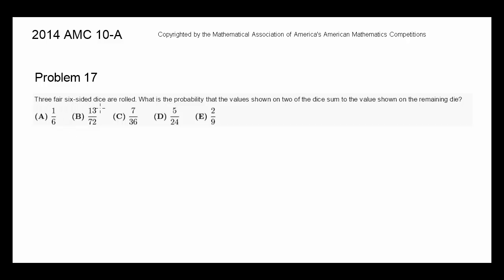Three fair six-sided dice are rolled. What is the probability that the values shown on two of the dice sum to the value shown on the remaining die?